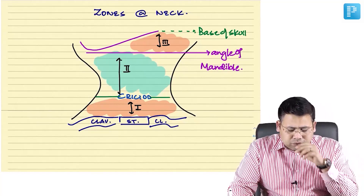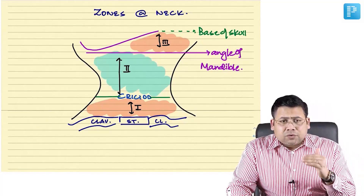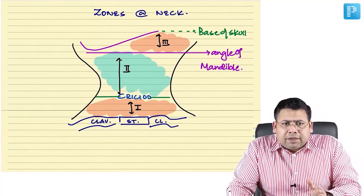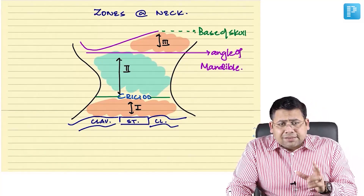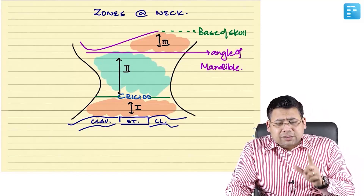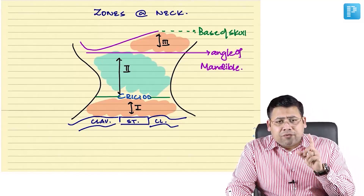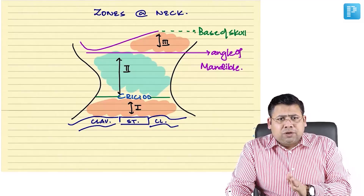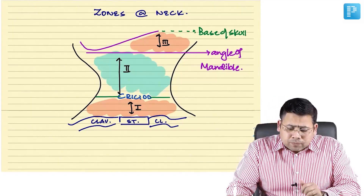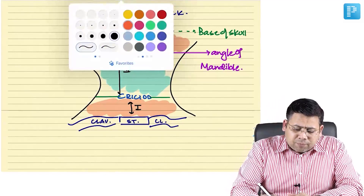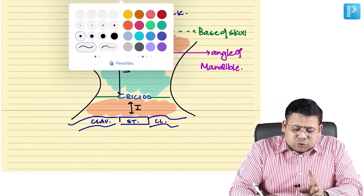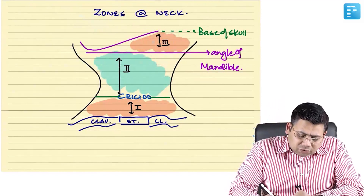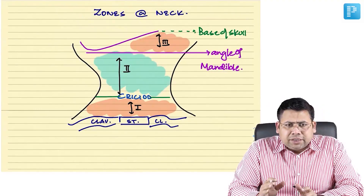One classical similarity between zone 1 and zone 3 is that part of each is hidden behind a bony cage. Surgical exploration in these zones is very cumbersome — you need a sternotomy for zone 1 and a mandibulotomy for zone 3. This is time-consuming and must be kept in mind when planning intervention.